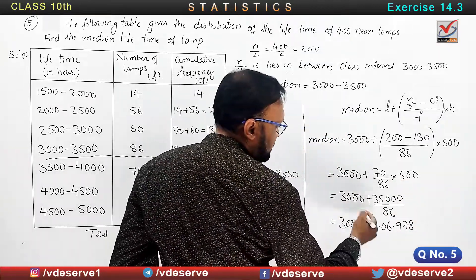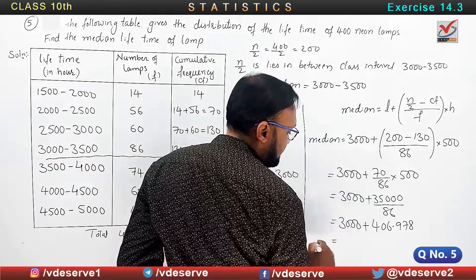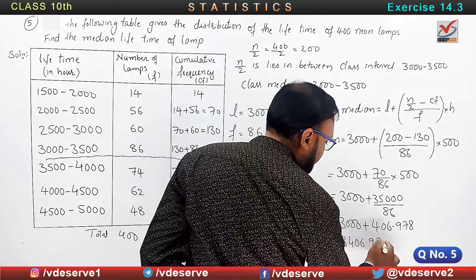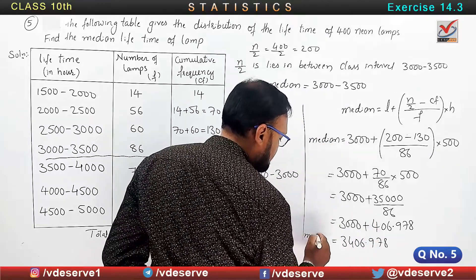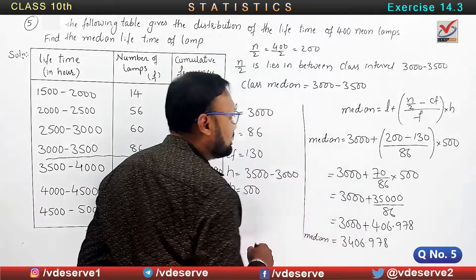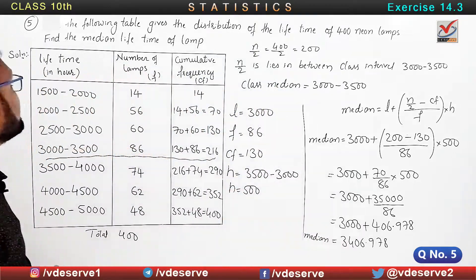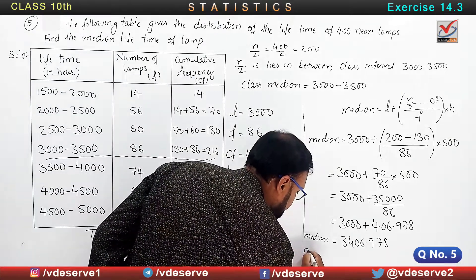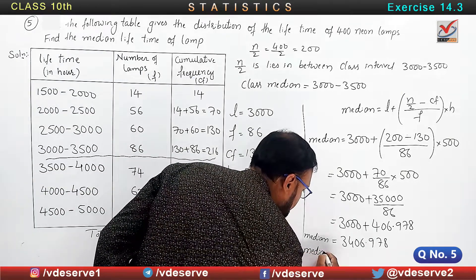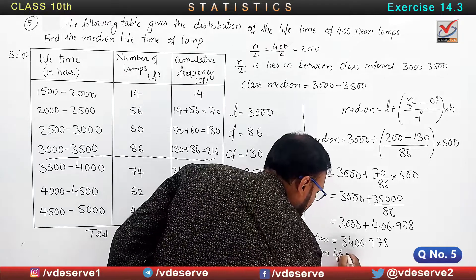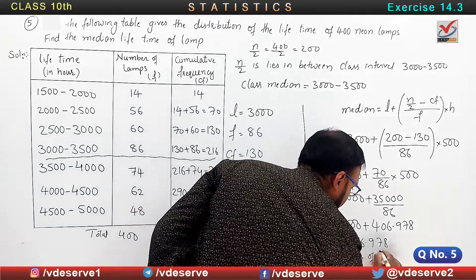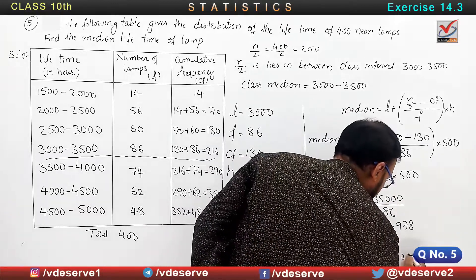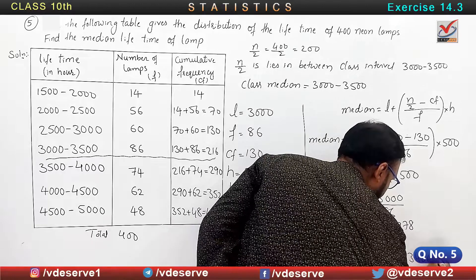So the median is 3406.978. Therefore, write one sentence: the median lifetime of the lamp is three thousand four hundred and six point nine seven eight hours.